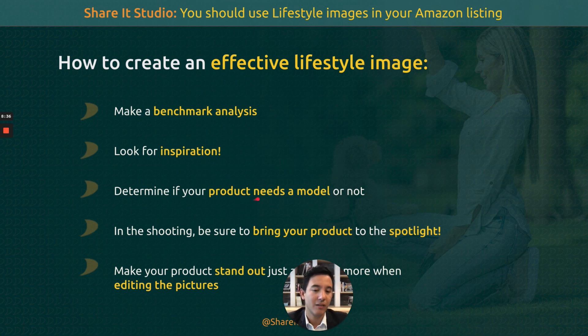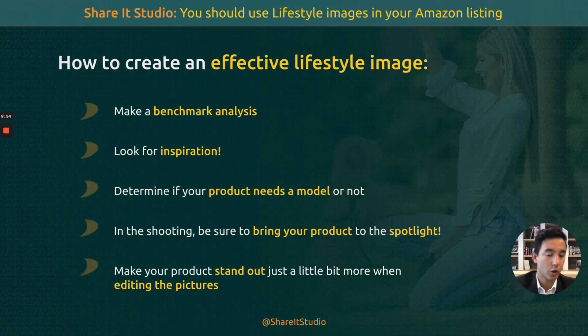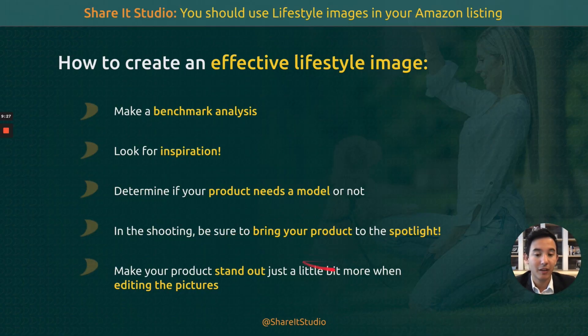Determine if your product needs a model — most likely it will. Pick the right model. If 80% of the buyers are female, use a female model. Look at the age range and find a model that fits that criteria. That's why you see brands like Victoria's Secret change their set of models — the industry changes and you have to adapt. If not, you become the Blockbuster — nobody knows them now. Kids today know Netflix instead. Branding your products to stand out is very important.